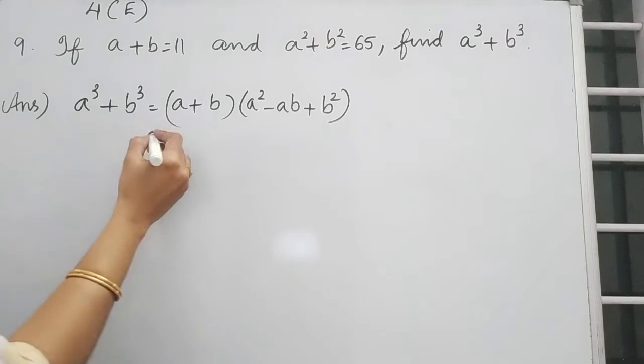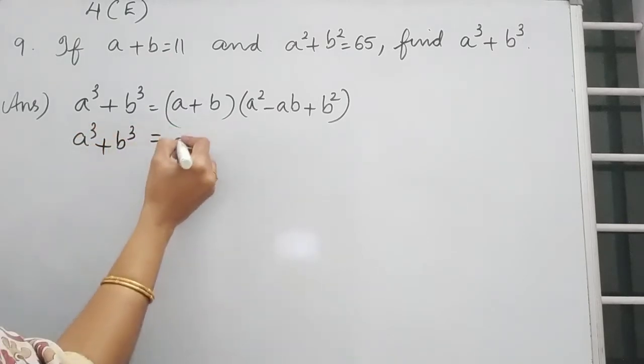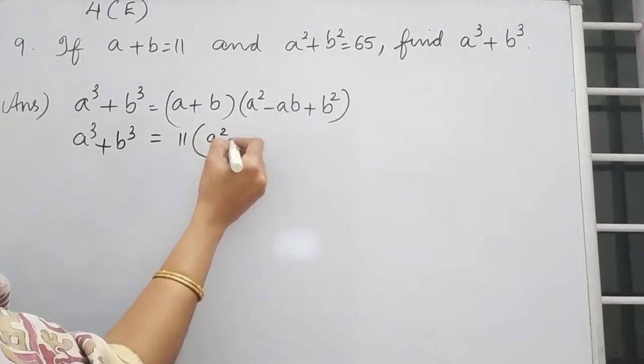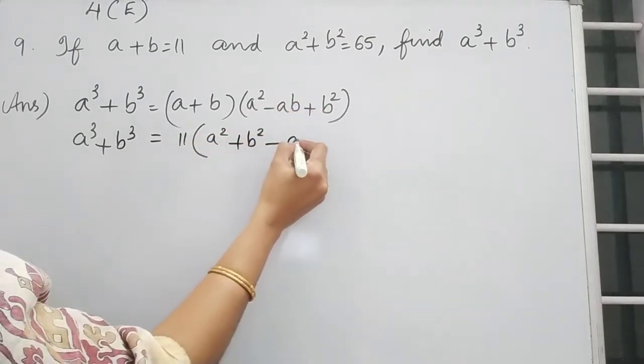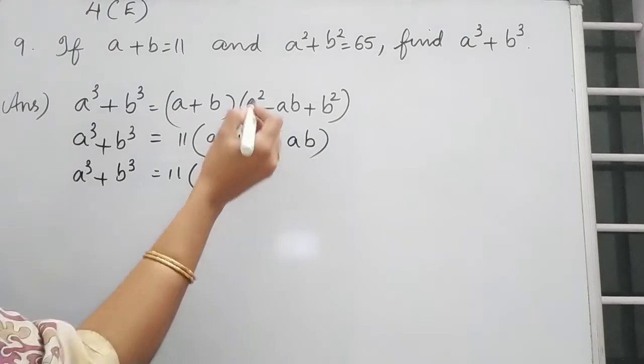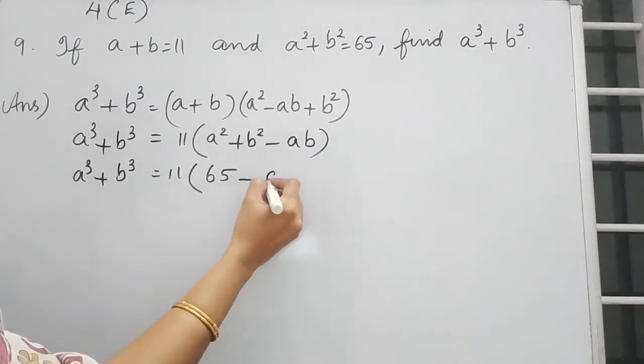So A plus B we have, we can substitute that. That is A cube plus B cube is equal to 11 into, we can take this together, that is A square plus B square minus AB. A cube plus B cube is equal to 11 into A square plus B square is 65 minus AB.